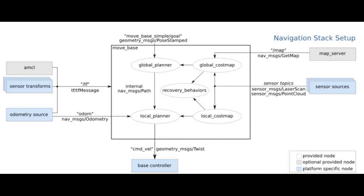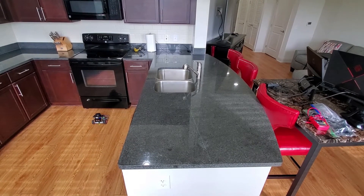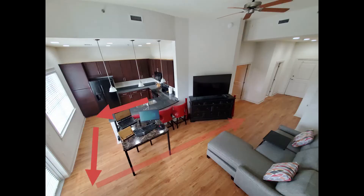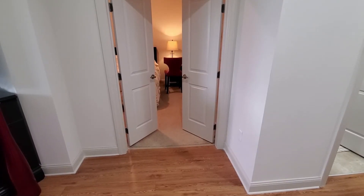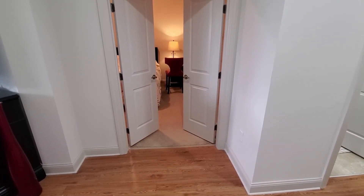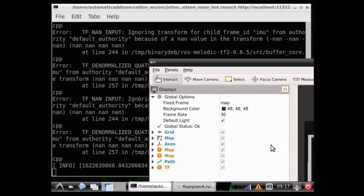I created a map using a blueprint of my apartment. Here is my apartment — I want my robot to autonomously navigate from my kitchen to my bedroom. A real-world use case for this project would be a room service robot that could bring me breakfast in bed. Let's see the robot in action.